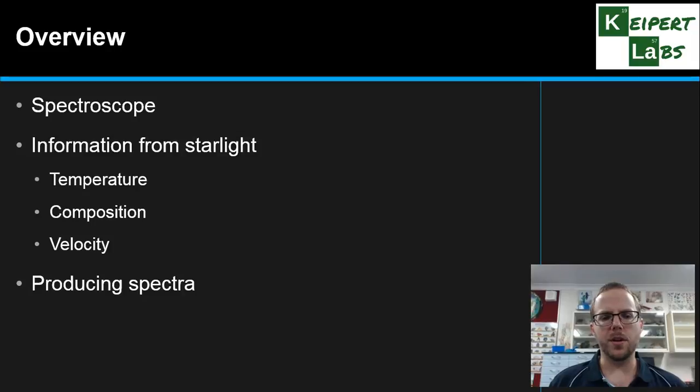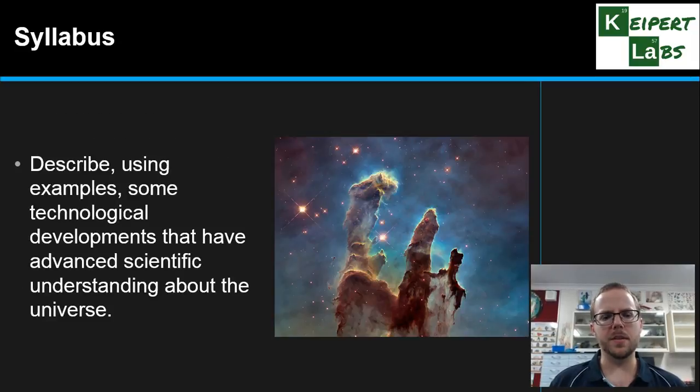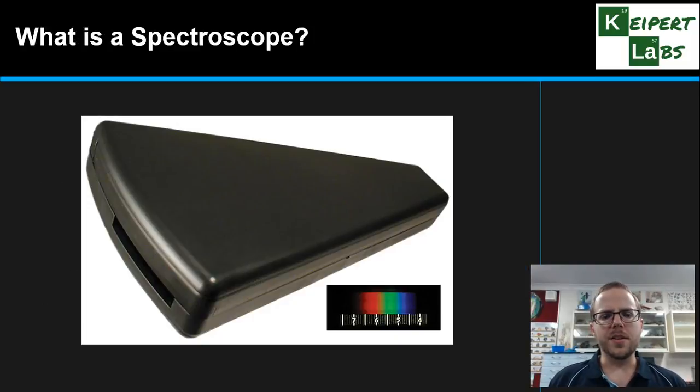So let's start by looking at what a spectroscope is, remembering that we're looking at technological developments that have advanced our scientific understanding of the universe. This is an image of the sort of spectroscope you might use in a school lab. Astronomers would use something much more sophisticated than this, but this still does exactly the same job.